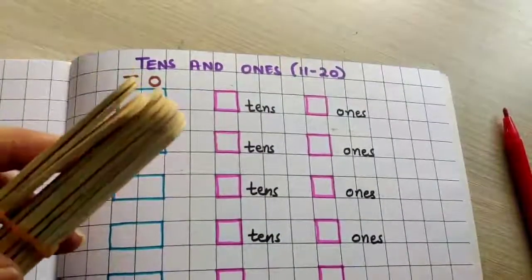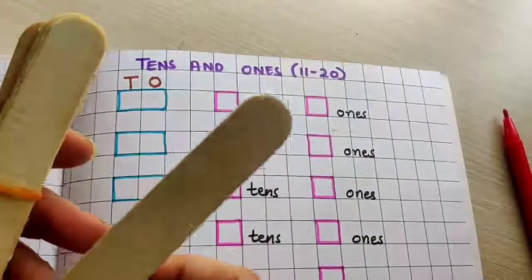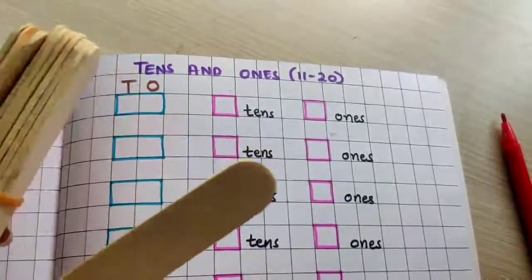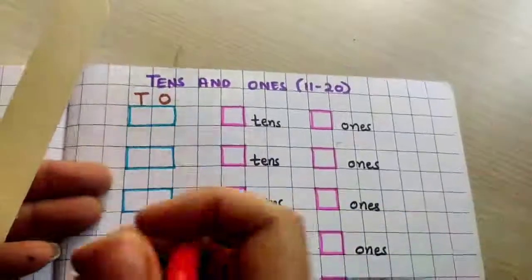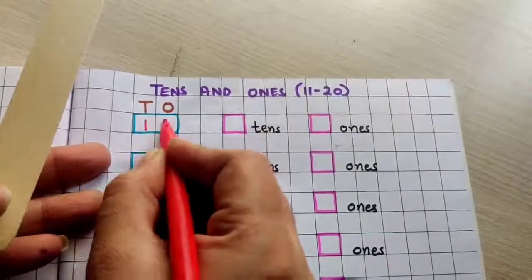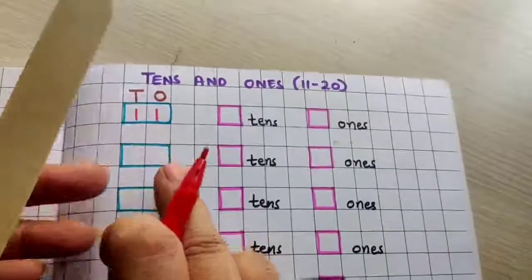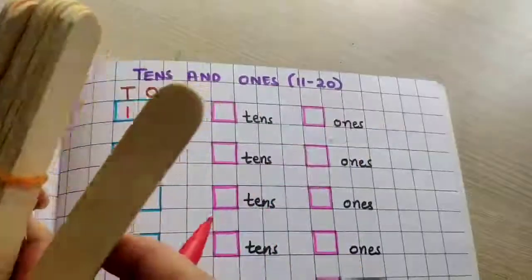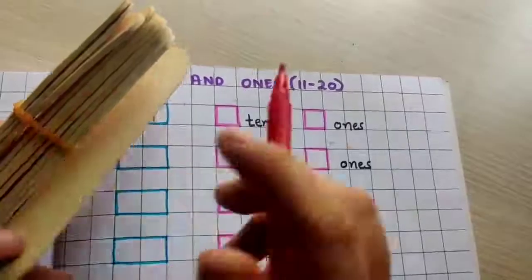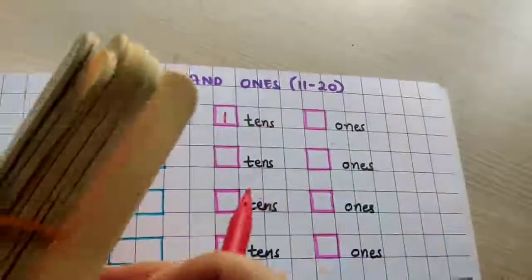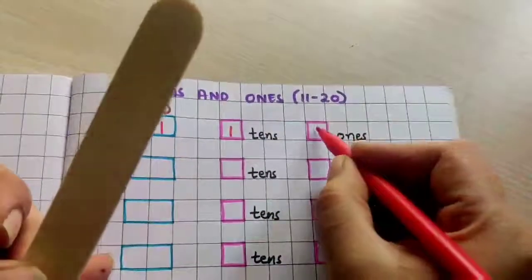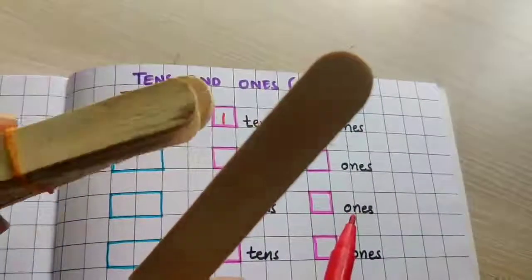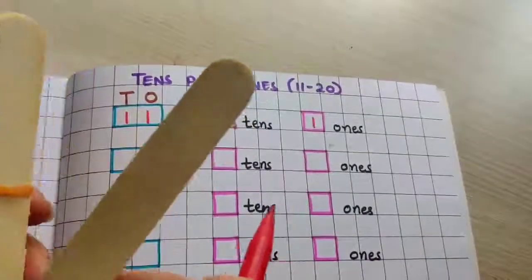Now in this set of 10, if I am adding one more stick, what does it become children? It becomes 11. Yes, 10 plus 1 is 11. How this 11 is made? Using one set of 10. So how many tens do I have? 1 set of tens. 1 ten and 1 one — 1 set of 10 and a single stick — this makes 11.